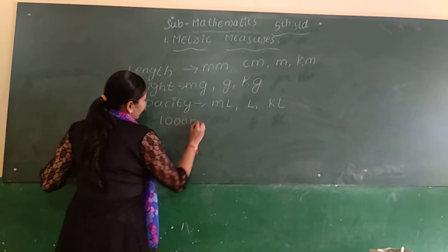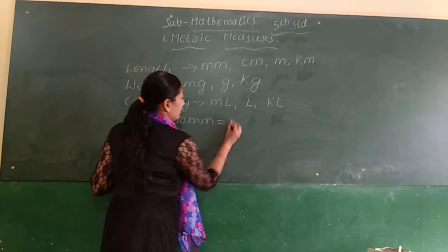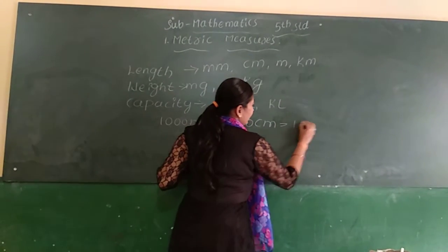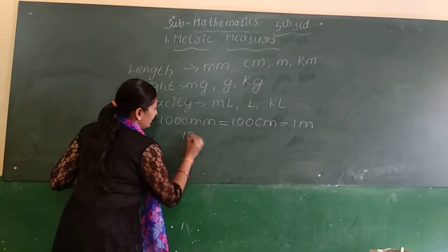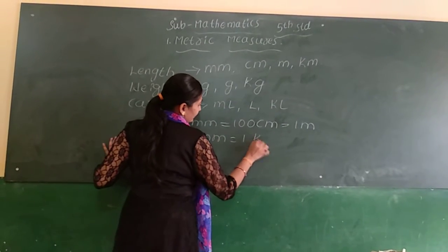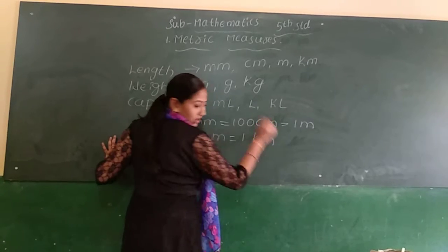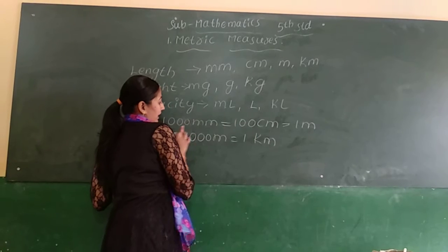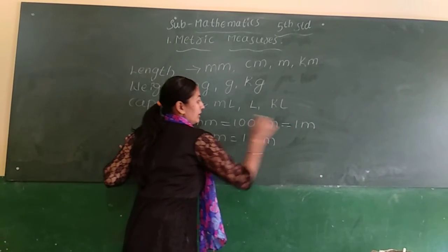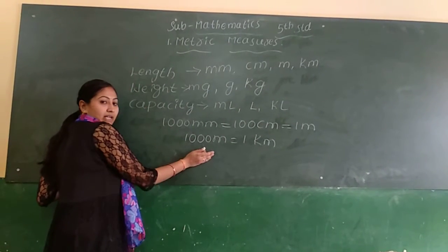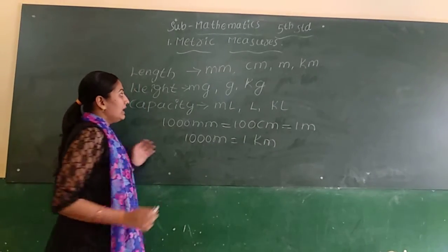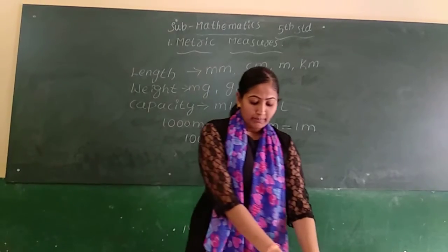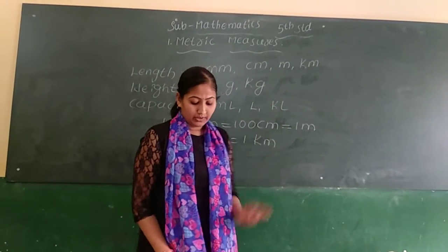1000 millimeters is equal to 100 centimeters, which is equal to 1 meter. And 1000 meters is equal to 1 kilometer, okay? So 1000 millimeters is also equal to 1 meter, and 1000 meters is equal to 1 kilometer. Like this, we measure length, weight, and capacity in these units.